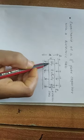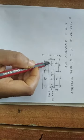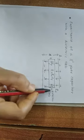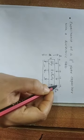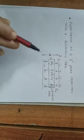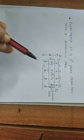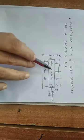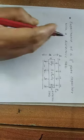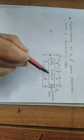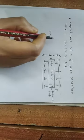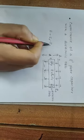The induced charges on the dielectric slab create an electric field inside the slab, which we call EP. This EP field is in the opposite direction to E0. Therefore, the net electric field inside the slab is reduced, and we call it E, where E is equal to E0 minus EP.